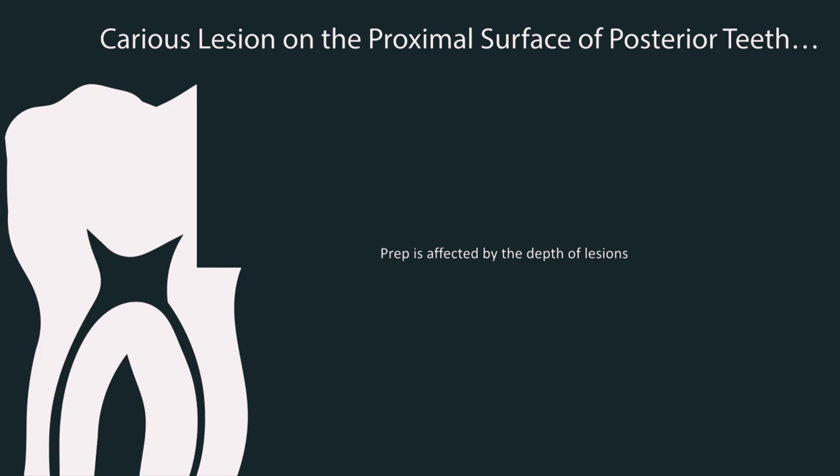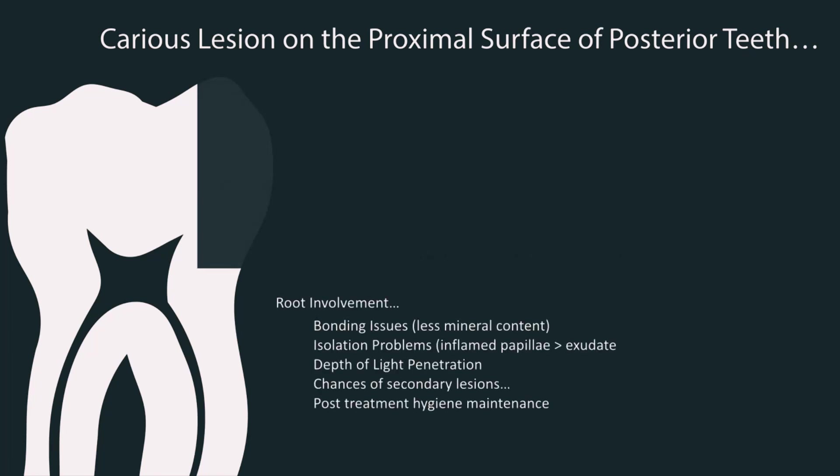As the preparation is enlarged, resistance form as well as bonding variables must be kept in mind during preparation, matricing, and restoration. Whenever there is some root involvement, there will be bonding issues because of less mineral content. We may be trying to bond on cementum, and root dentine already has very low mineral content and higher collagen content, so there will be some bonding issues.